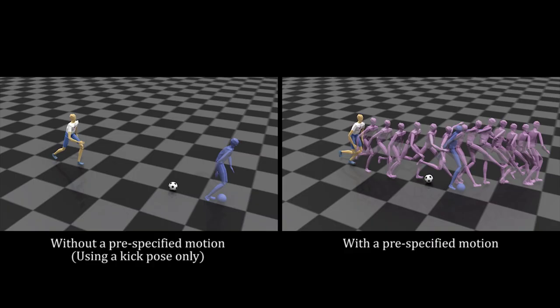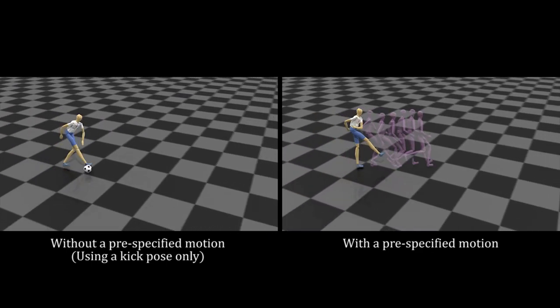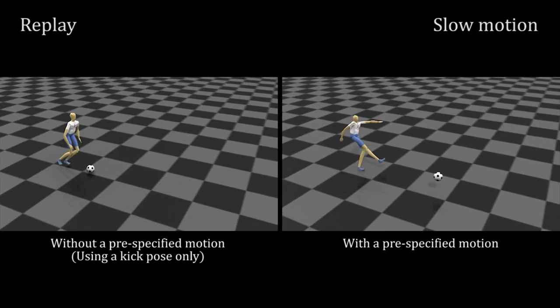Effect of a pre-specified motion. The pre-specified motion contributes to enhancing the quality of the resulting motions by preventing an abrupt transition to the kick motion.